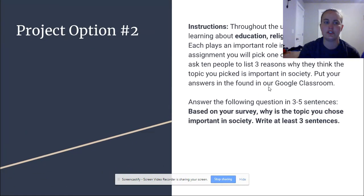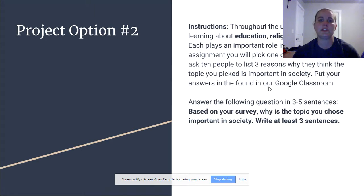So here's your second option that you can choose from. This one is in FlipSwitch. This one is not a video. I decided to do something a little bit different here. So it's not a heavy writing assignment, but it's also not one where you're just going to sit and watch a video. So here's the instructions. Throughout the unit, you will be learning about education, religion, and sports. Each plays an important role in society. For this assignment, you will pick one of those topics and ask 10 people to list three reasons why they think the topic you picked is important in society. Put your answers in our Google Classroom.